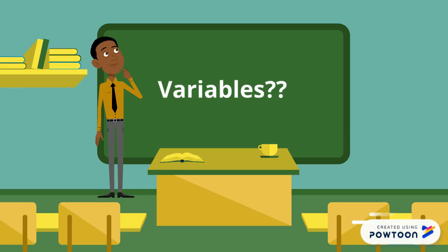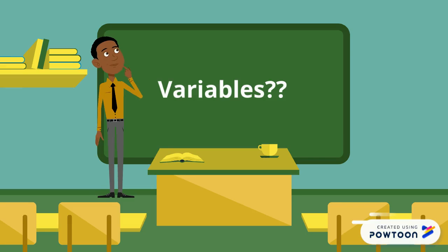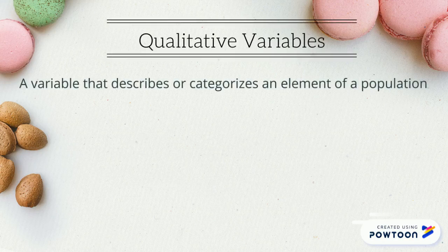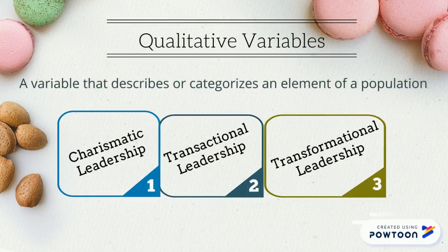The variables for this research are qualitative variables. A qualitative variable describes or categorizes an element of a population. The elements for this research are charismatic leadership, transactional leadership, and transformational leadership.